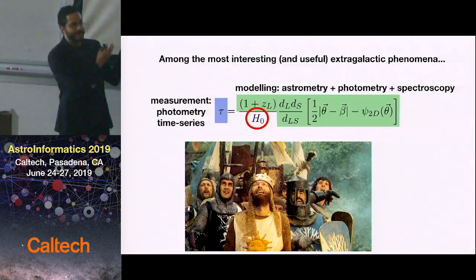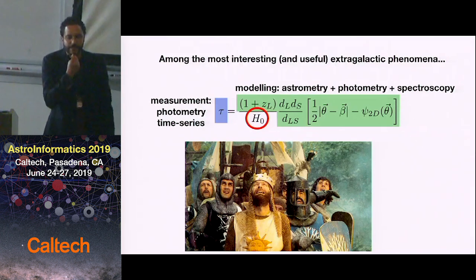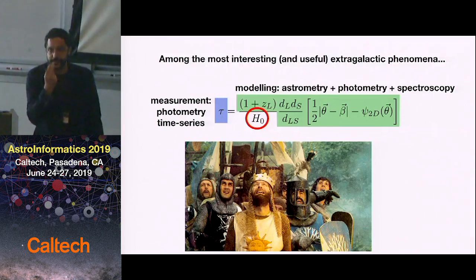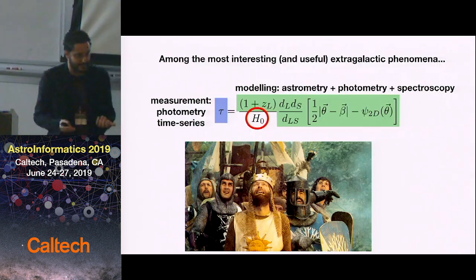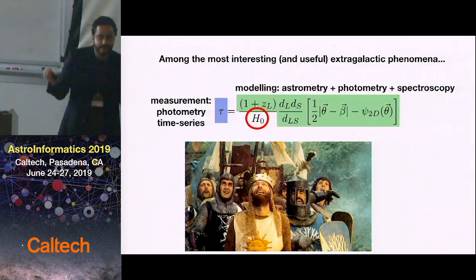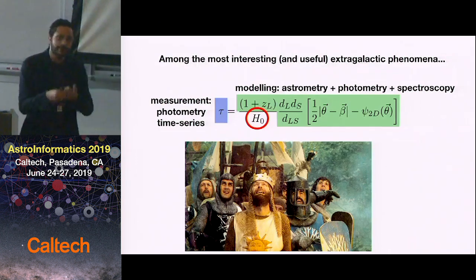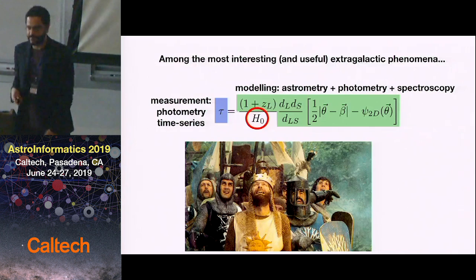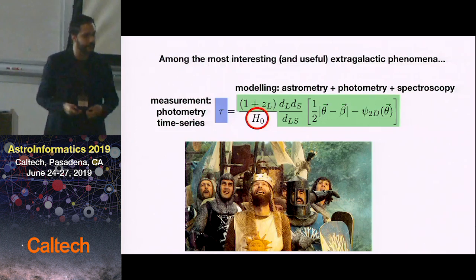The Hubble constant is one of the holy grails of modern astronomy because it is under very strong tension. We have two different types of experiments measuring incompatible values at more than 3.8 sigma. Is this new physics? Is it systematics on the experiments? At the moment, nobody knows. This makes lensed quasars a very good way to justify why we're looking for beauty in the universe.